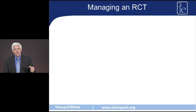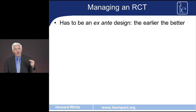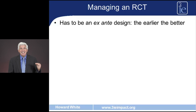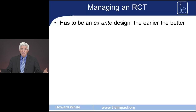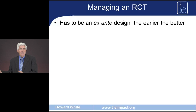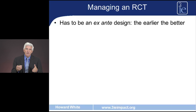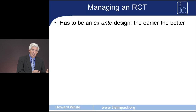What are these issues? The first one is that an RCT has to have an ex-ante design. You can't take an existing project and randomise which communities or households get the project, because the project's already started. So you have to think about a randomised controlled trial at the design stage of the project — the earlier, the better.